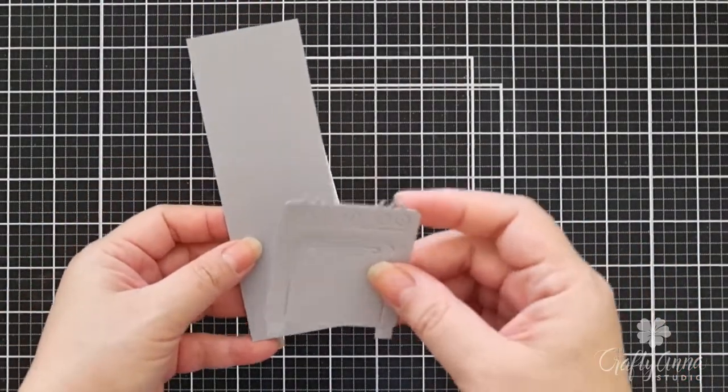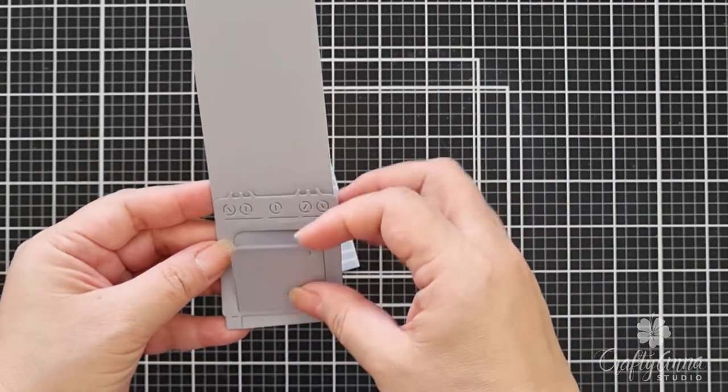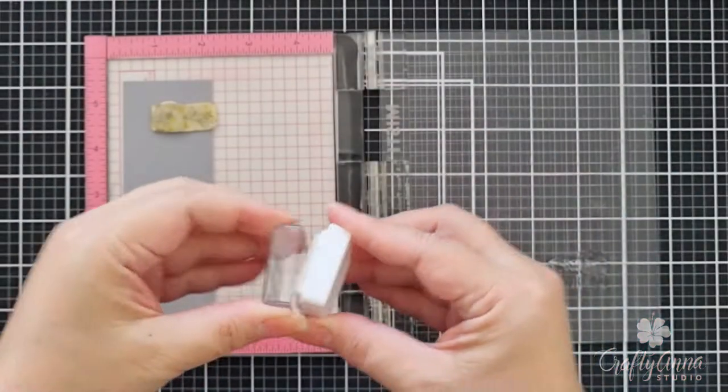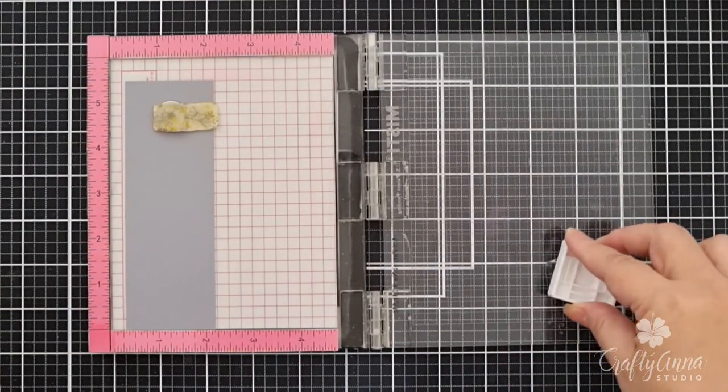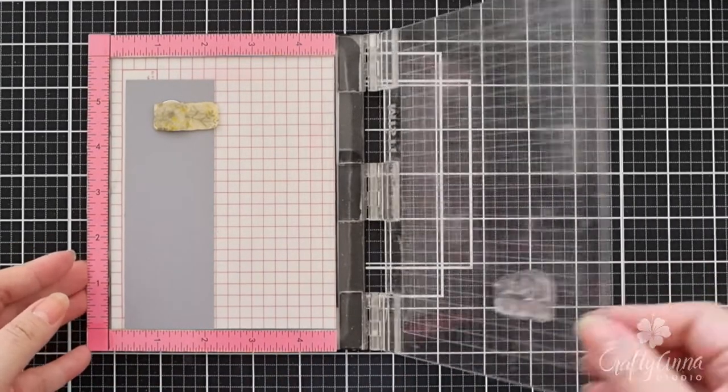Then I will use another piece of grey cardstock for the back of the oven. This is where I will heat emboss the sentiment bun in the oven. I mounted the sentiment stamp on a mini MISTI, then I'll ink it up with embossing ink and use white embossing powder.